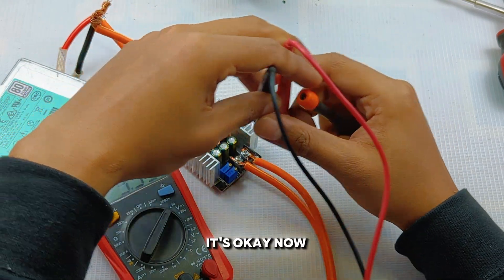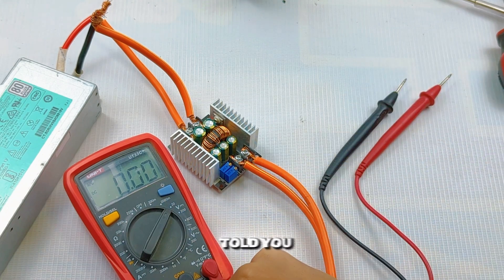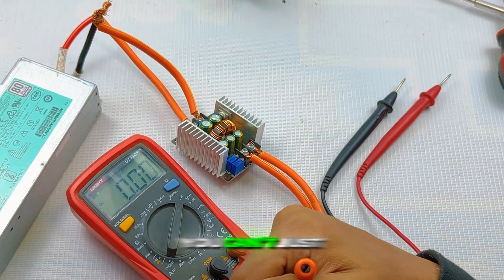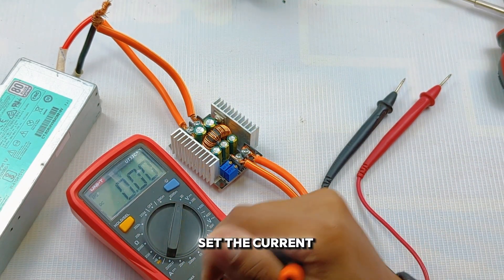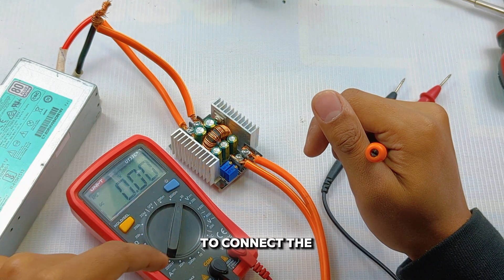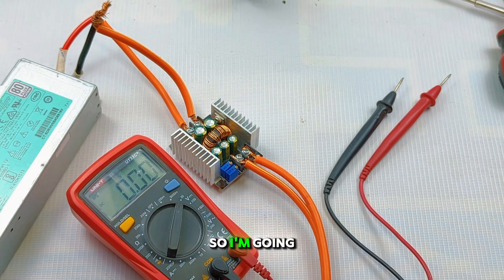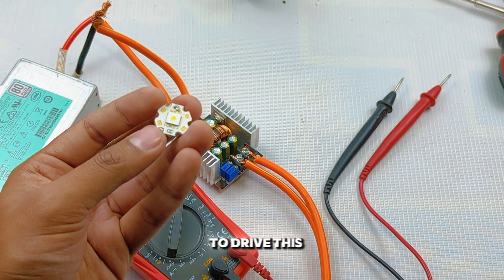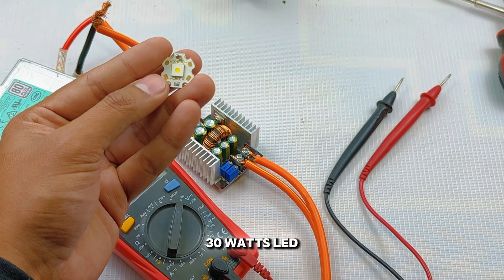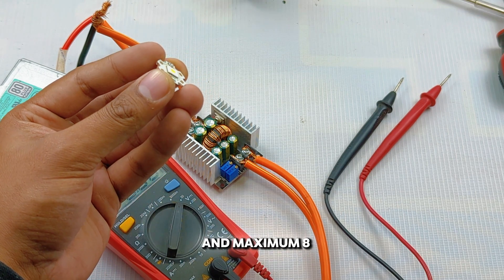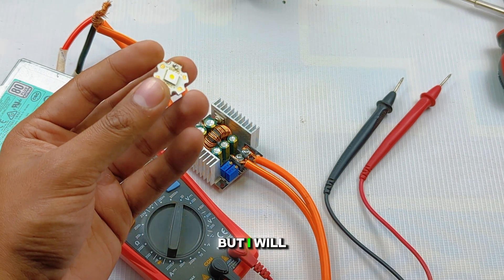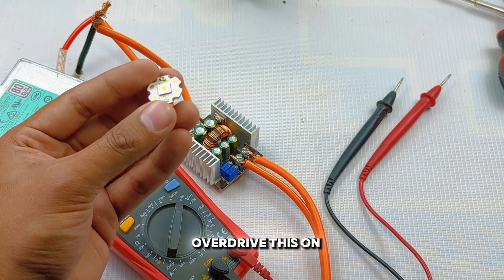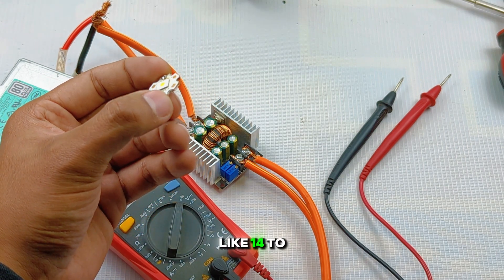Now, as I already told you, you can't just short the output terminals to set the current. You always have to connect the load first. I am going to drive this 30 watt LED which operates on 4 volts and maximum 8 amps, but I will overdrive this at 14 to 15 amps or more.